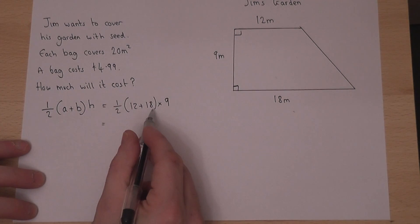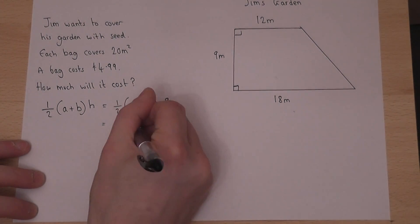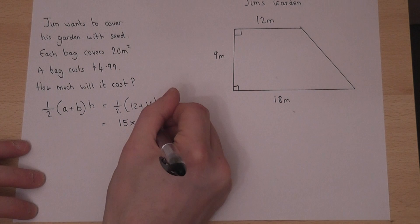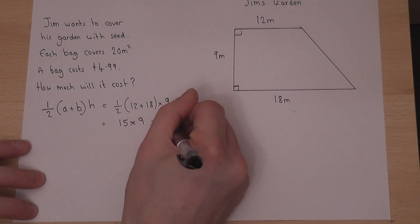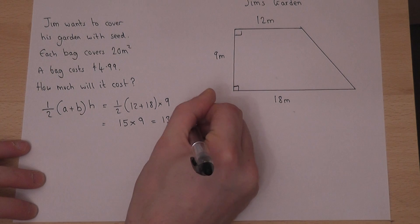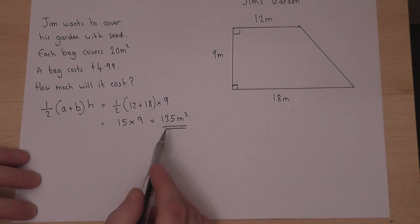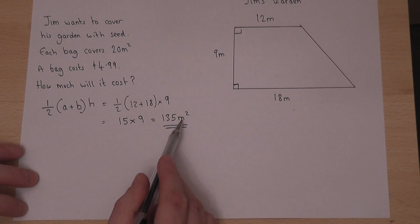Now 12 plus 18 is 30, and a half of 30 is 15. So the area is 15 times 9, which is 135 meters squared. So his garden has an area of 135 meters squared.